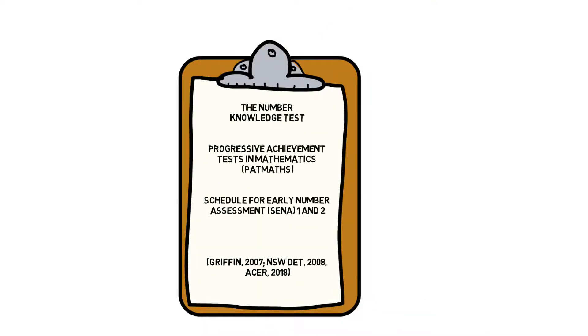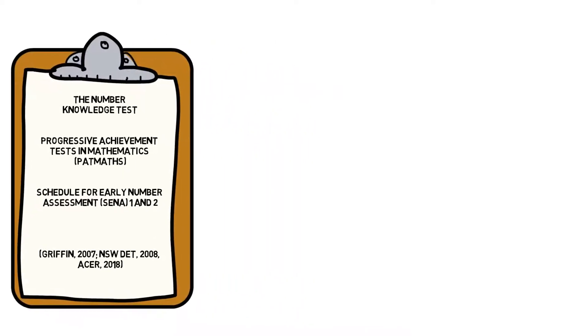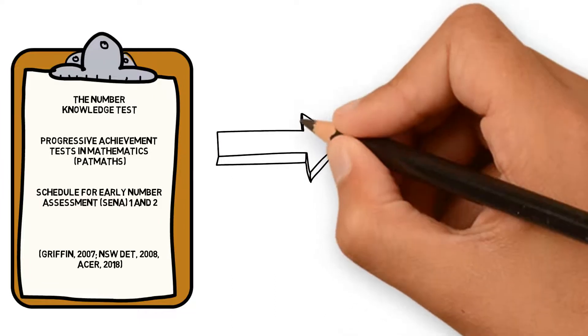The number knowledge test, PATMAPS, and schedule for early number assessment 1 and 2 are all reliable and valuable tests that have been found to be dependable predictors of mathematical difficulties.